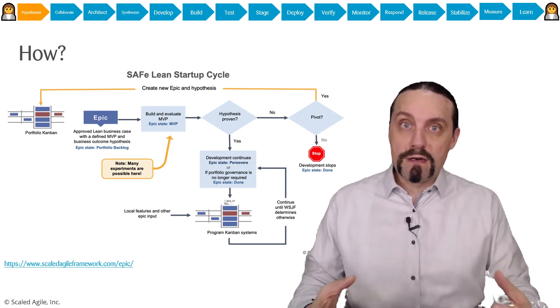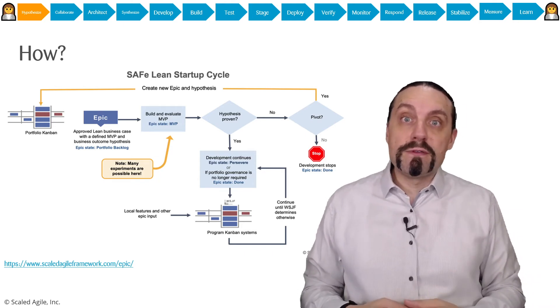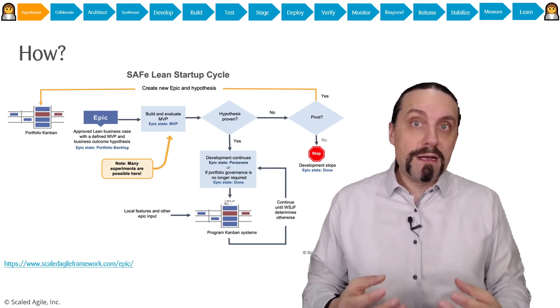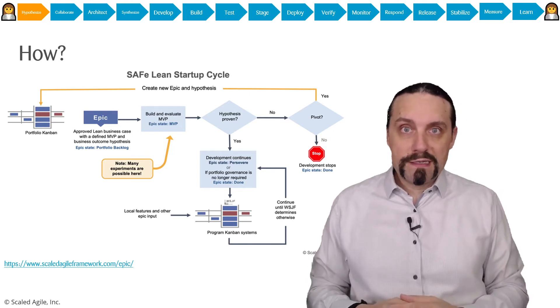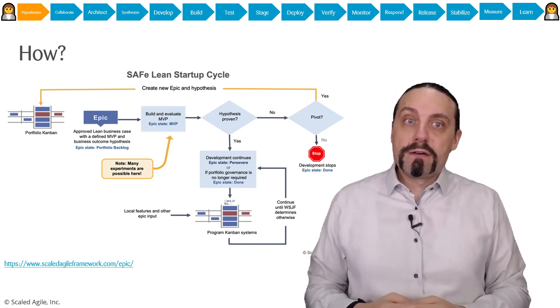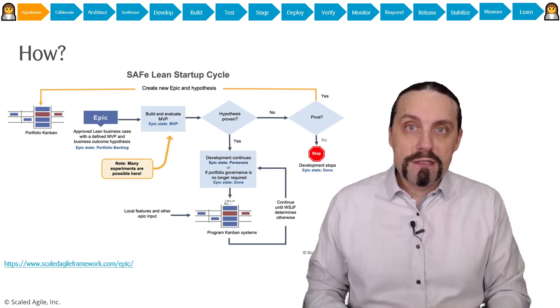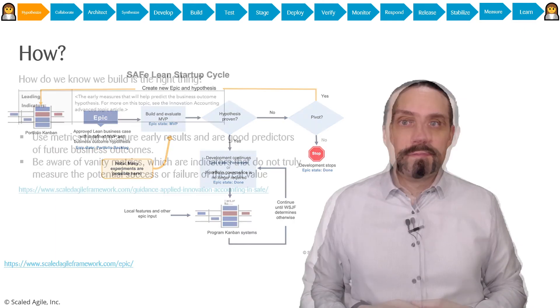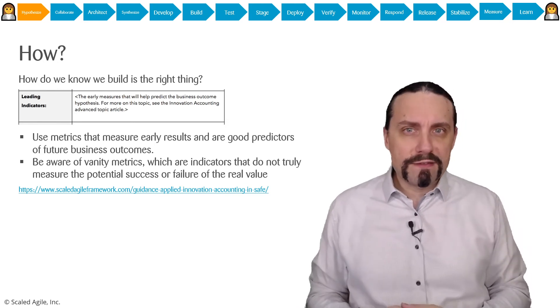When the hypothesis is proven to be true then we can decide if we are going to invest more money and build up more features into that. Or if it has been disproven then we are going back and do a pivot. Because then we need to decide whatever we are going to stop completely on this hypothesis on this epic. Or if we are going to say okay we create a new epic with a new hypothesis and go again through this cycle.